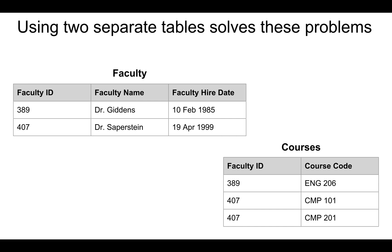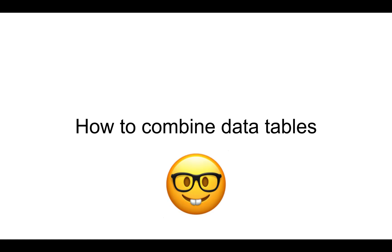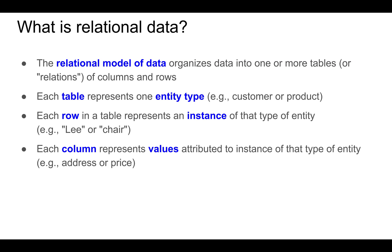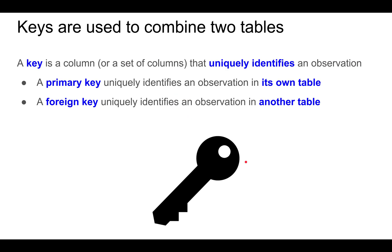And if you store the information in two separate tables — one table for faculty and another for courses — then this problem is solved. So now let's talk about how to combine data tables. The relational model of data organizes data into multiple tables, and each table represents one entity type. Each row in a table represents an instance of that entity type, and each column represents values attributed to that instance. To identify an observation, you need to use what is known as a key.